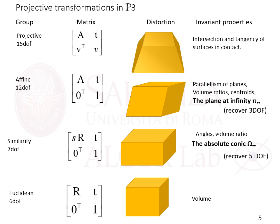In the first column of the table we see the degrees of freedom of each transformation, starting from the most general, the projective one. The 15 degrees of freedom of a projective transformation are: 3 for rotation, 3 for translation, 1 for isotropic scaling — which are the similarities — 5 for affine scaling, and 3 for the projective part of the transformation. Here the matrix A is a non-singular 3x3 matrix, T is a 3-vector of translation, and V is a general 3-vector.